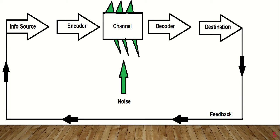The info source is the sender, or the person who has made the call. Then we have the encoder, which is the cell phone. The cell phone turns the person's voice into a series of binary data packages that can be sent down through cell phone lines. Remember, encoding is the process of turning thoughts to communication.